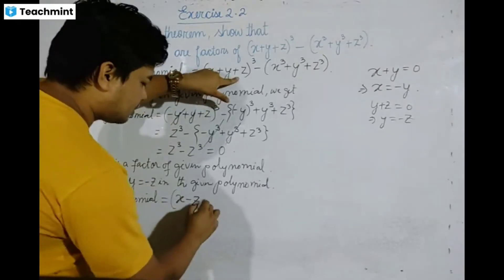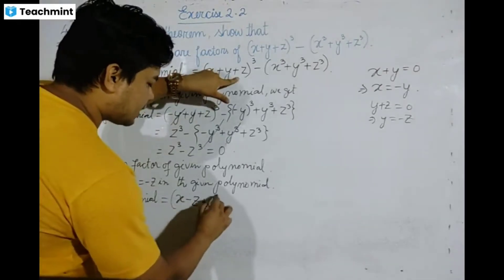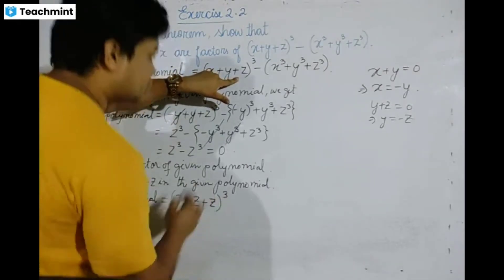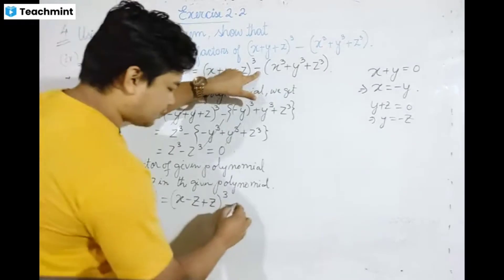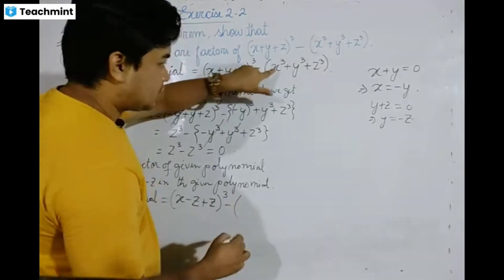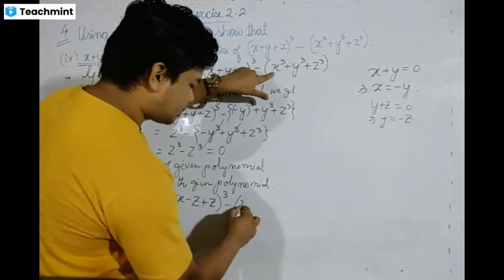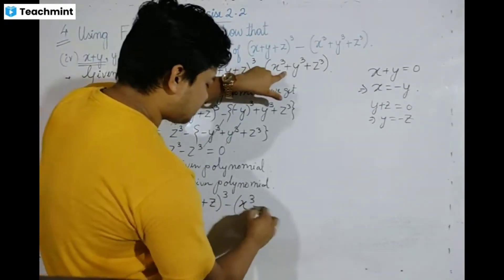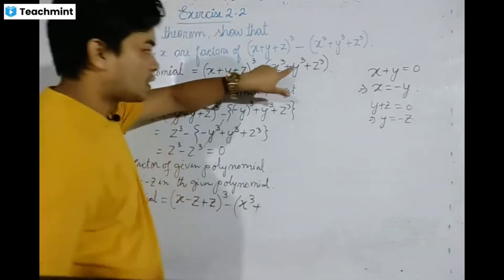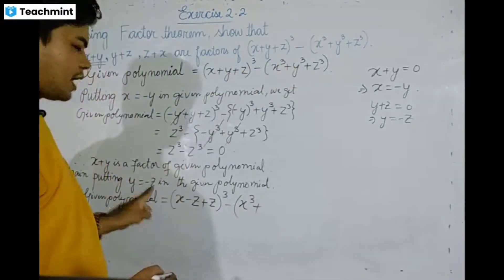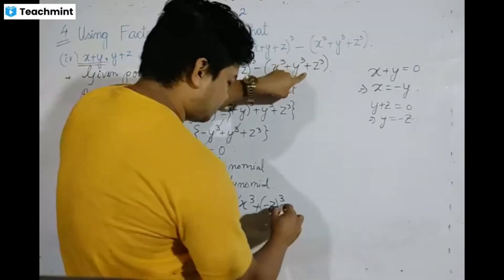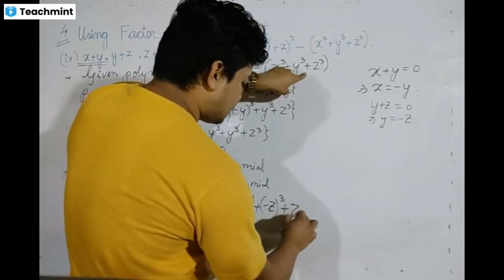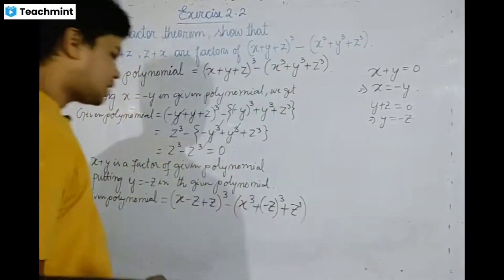Substituting y equal to minus z: minus z plus z, whole cube, minus x cube, plus y cube — that is minus z whole cube — plus z cube. So we get: y equal to minus z whole cube plus z cube.